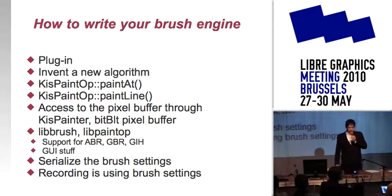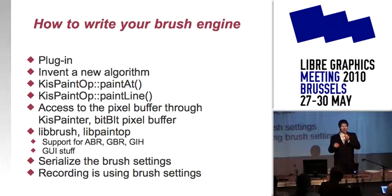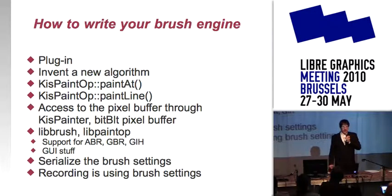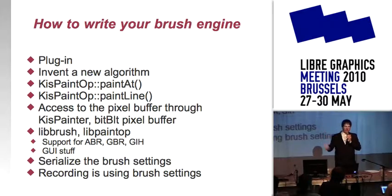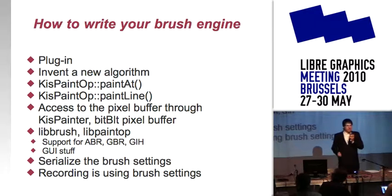We have two supporting libraries for you. We support ABR brushes — Photoshop brushes up to version six or seven — and we support GIMP brushes. In libpaintop you can find some GUI stuff that can help you. So you have paintAt and paintLine implemented, you define some algorithm that renders something into your pixel buffer, and then you just need to serialize the brush settings so they can be reused. When the artist makes some settings of the brush engine, they can save it and use it later. It is also used in recording.